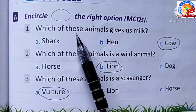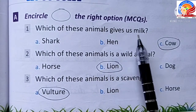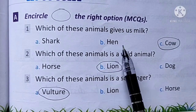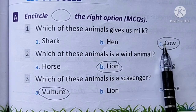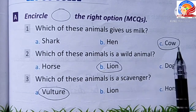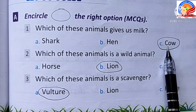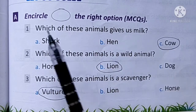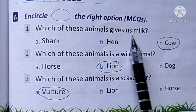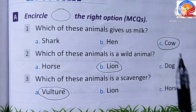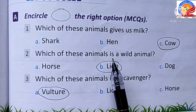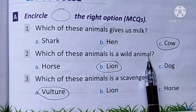Which of these animals gives us milk? Options: shark, hen, cow. The answer is cow.